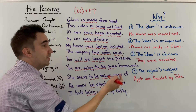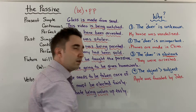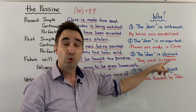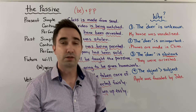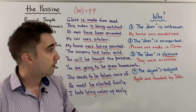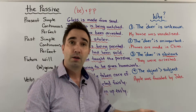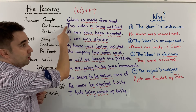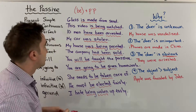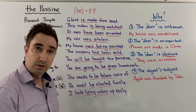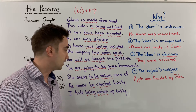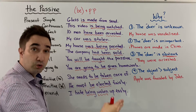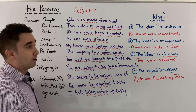Reason three: the doer is obvious. 'Obvious' means very clear, very easy to see. So I can say: they were arrested. Who arrested them? Of course the police — obvious kind of means 'of course.' Of course the police arrested them, but I want to talk about them, not the police. So I say: they were arrested. This video is being watched — it's obvious, you are watching this video. Ten men have been arrested — it's obvious who arrested them, it was the police. He must be elected fairly — who elects? The voters. It's very obvious who does that action.